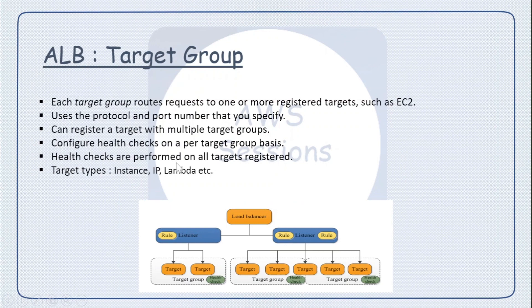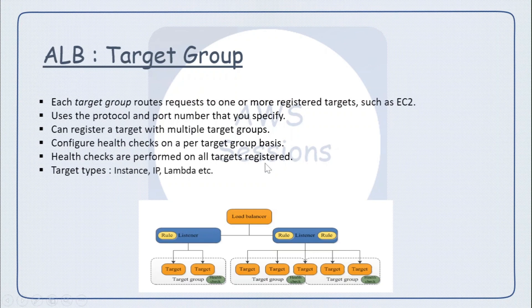Target groups are a very important component of ALB. Each target group routes requests to one or more registered targets. A target group is a collection of targets — targets can be instances, IP addresses, Lambda functions, etc. You define a port and protocol for the target group. You can register the same target with multiple target groups; for example, an EC2 instance running applications on two different ports can be registered in two different target groups. Health checks are configured per target group and are performed on all registered targets inside that group.